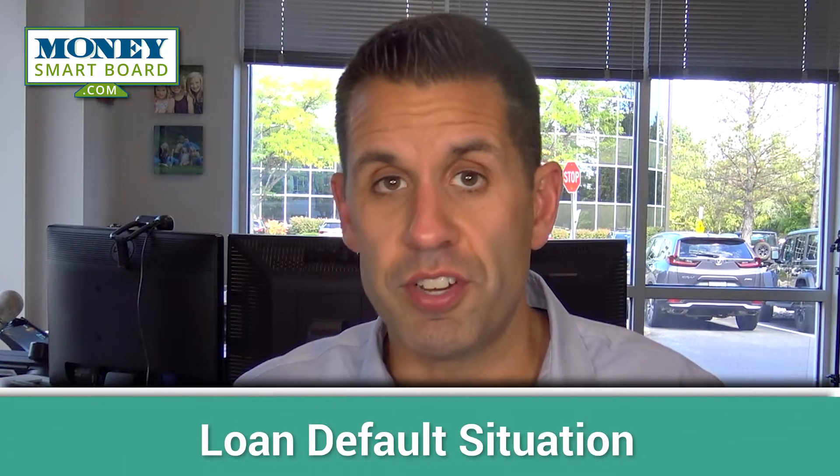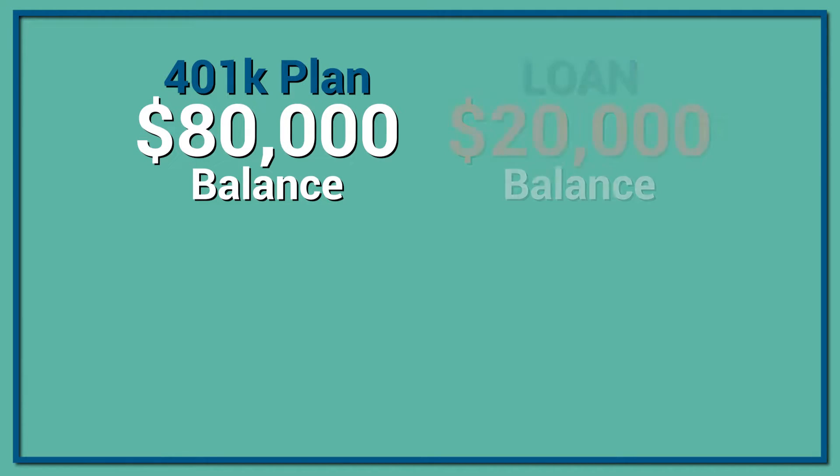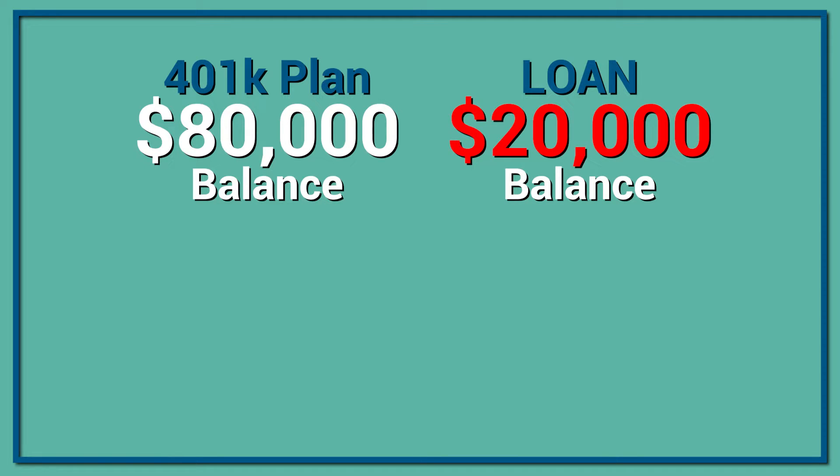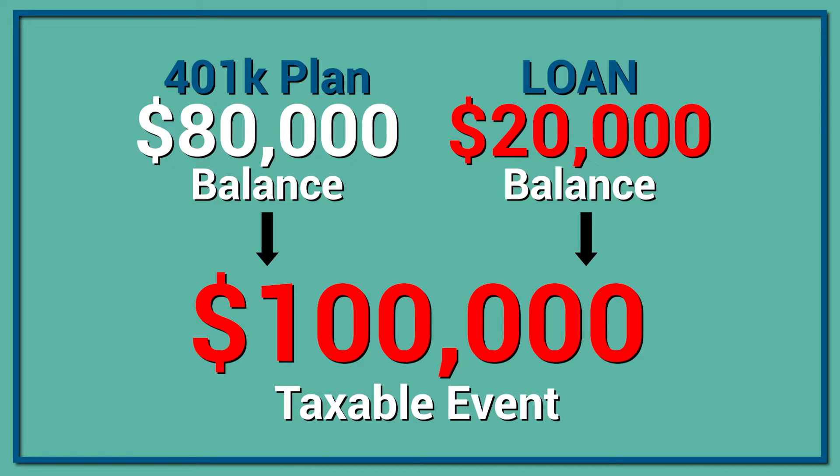Now let's address the loan default situation. If you requested a loan against your 401k account and there's still an outstanding balance when you terminated employment or requested a cash distribution, that outstanding loan balance now becomes a taxable event to you. You already got the money when you took the loan and never paid tax on it, but now that you're asking for a distribution, the full amount becomes taxable even though they're not sending you any additional money. For example: you have an $80,000 balance in your 401k but a $20,000 outstanding loan — the disbursement triggers a $100,000 taxable event. The mandatory 20% Fed withholding is calculated on $100,000, not $80,000, which surprises people who expect a larger net check.